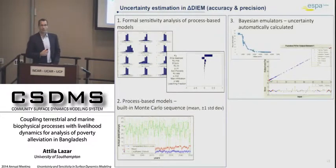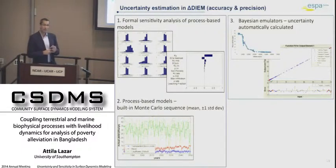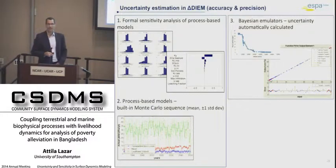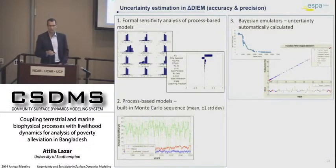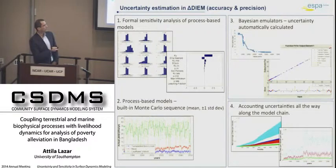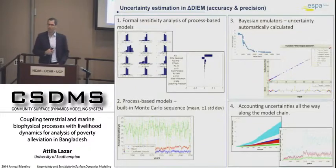When we have a more complicated model, like DELFT3D, we will simplify it to an emulator. When we create the emulator, we keep track of the error around the mean output. That mean value and the error are passed on in the model chain, and we are counting all the uncertainties along the model chain. So when you have stakeholder agent types, you always have an envelope of response and an envelope of livelihood indicators.